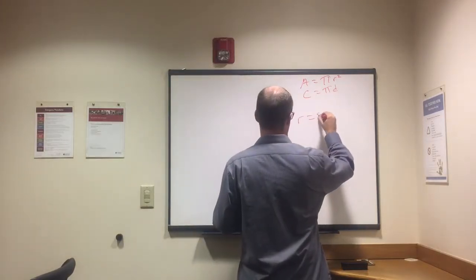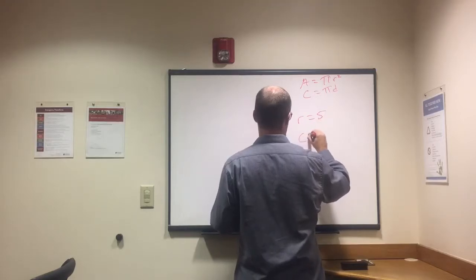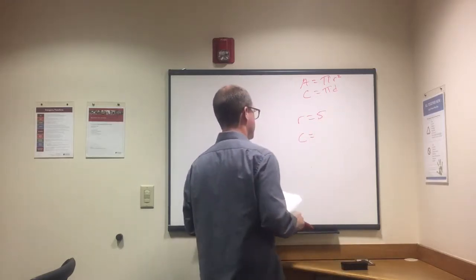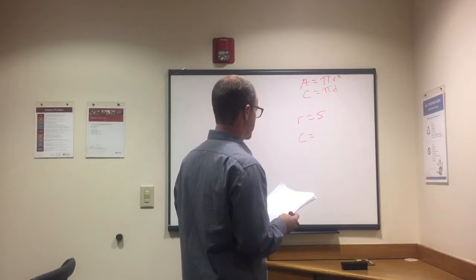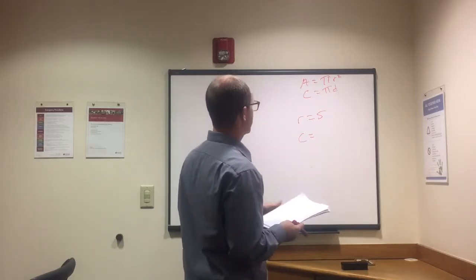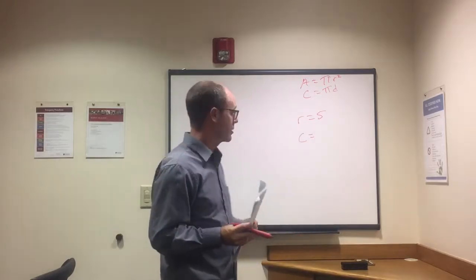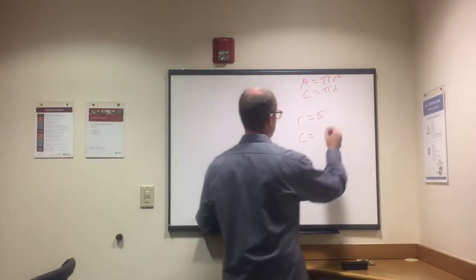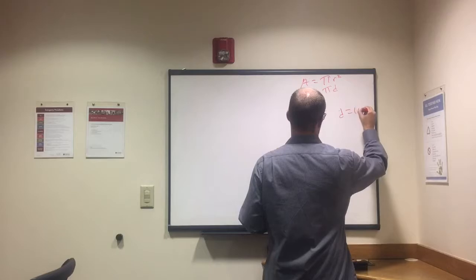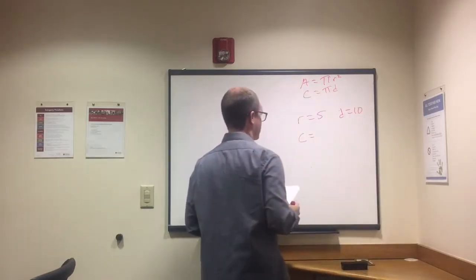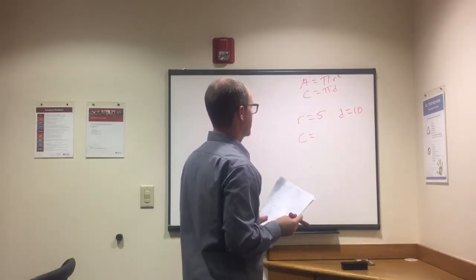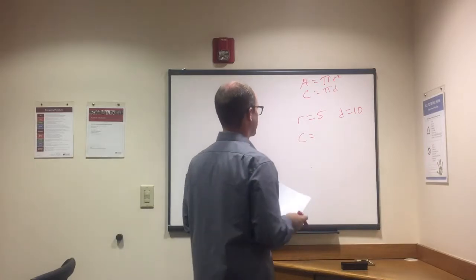So now if the radius equals 5, find the circumference. In this one we got to know if the radius is 5, diameter is twice radius. So if radius is 5, diameter is 10. Now pretty simple to solve, right?